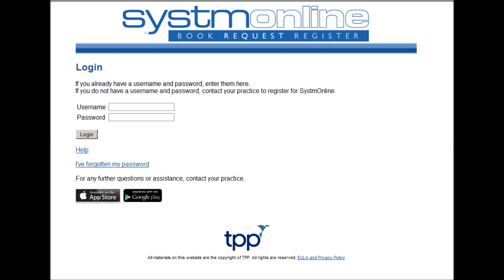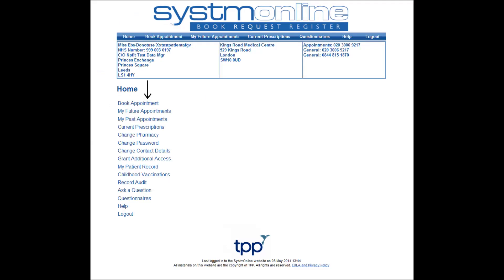You can also download the System One online app to your smartphone so that you can manage your appointments on the move. To start booking your appointment click on the home tab in the top left hand corner of the page. A list of services will be displayed and you should select the book appointment tab at the top of the list.